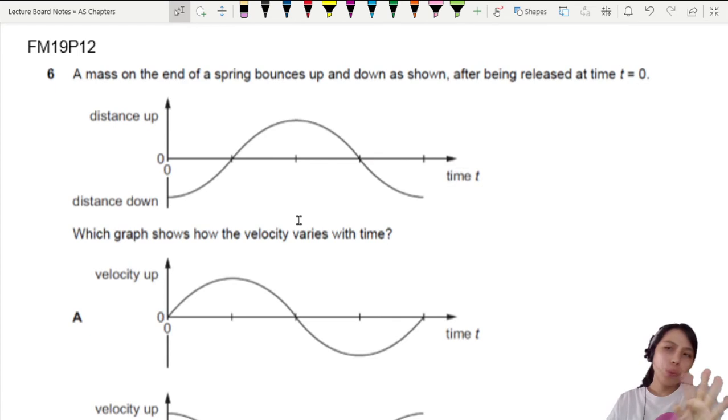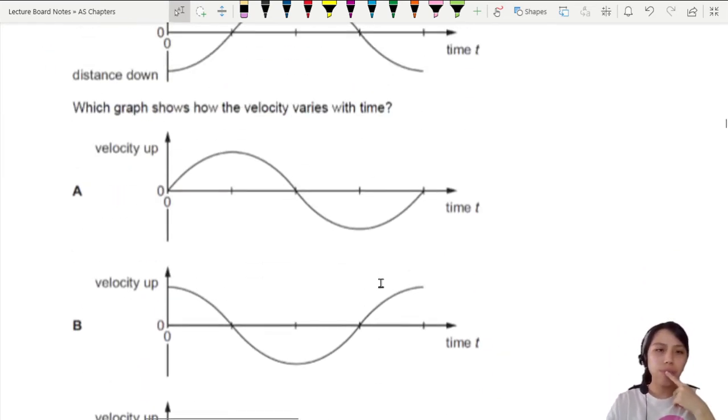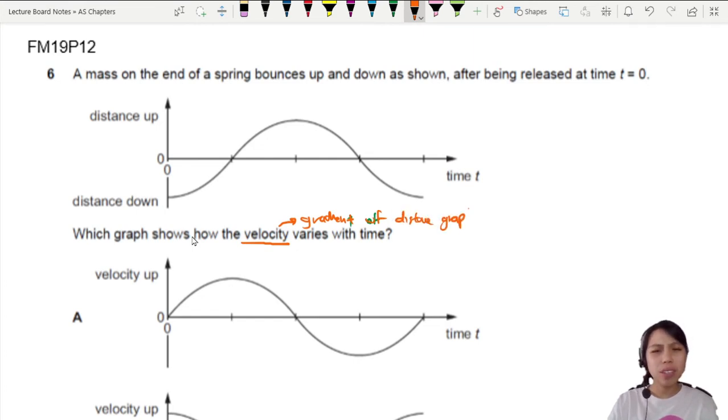This next one is kind of a weird shape. Look at this. This looks like math. Got sine, got cosine. What if we don't know the sine and cosine? You can still do it. You stay calm first. A mass on end of a string bounces up and down. This is the distance. So sometimes it's down there. Sometimes it's up there. Which graph shows the velocity? So we need to find the velocity. Velocity is gradients of our distance graph. Or displacement.